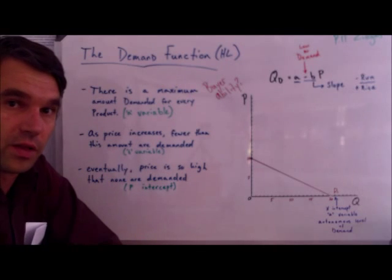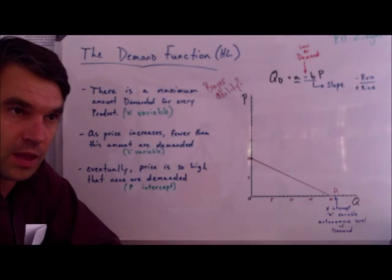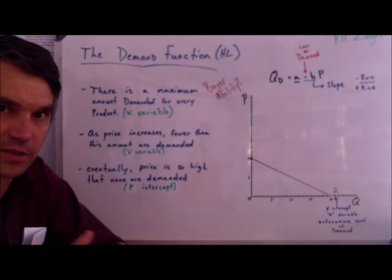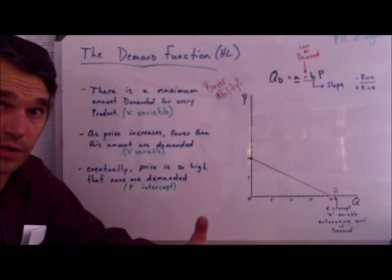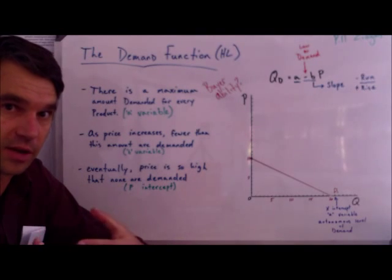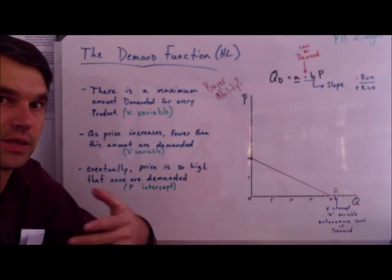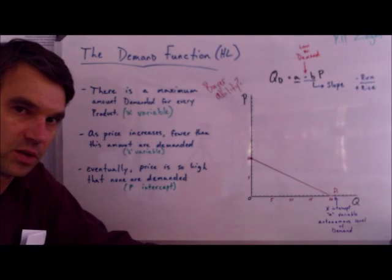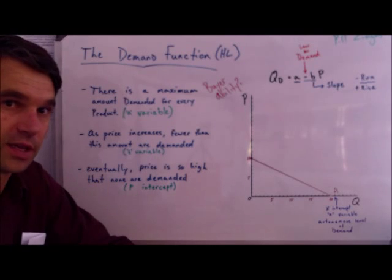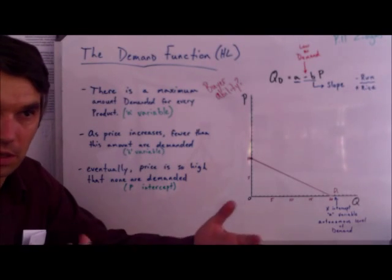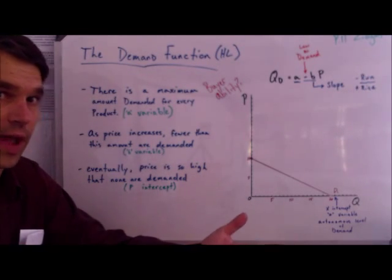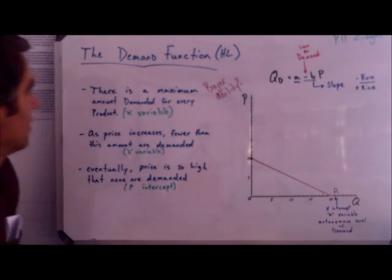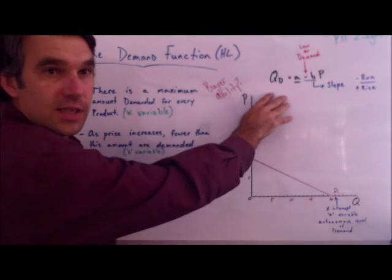Today I'm going to talk to you about what we call the demand function. When we look at things this way in economics, we're just trying to see the concept in a different way. We're trying to use our mathematical skills to explain why buyers do what buyers do. So keep that in mind as we go through this, because some of it is just seeing the same thing in a different way. For example, we can see the law of demand if we look at the demand function itself.